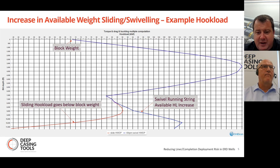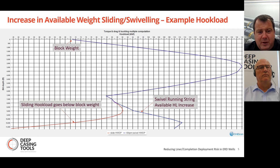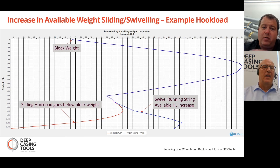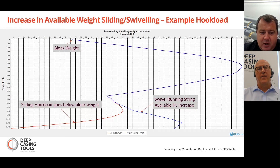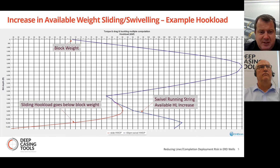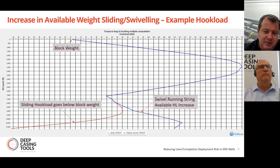With shallow TVD and long step-out, there's extremely high risk of not getting your completion to TD. The red line shows sliding the completion to TD — we're running out of weight quite dramatically once we go into the horizontal open hole, sliding well below block weight. Dave modeled this in our WellScan software, which we provide free of charge. Simply by rotating the drill pipe, you can see the hook load gain is very pronounced — in the range of 16,000 to 70,000 pounds — simply by rotating the drill pipe above the lower completion.